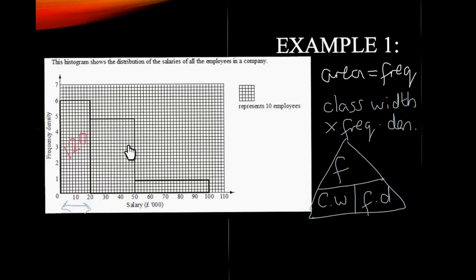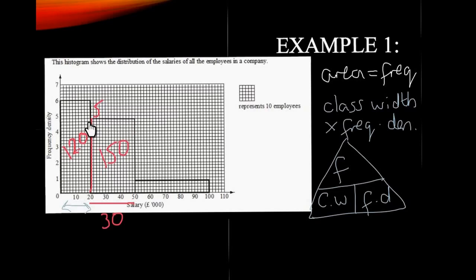Now that we've got this triangle, let's work out the rest of the information. In the next bar, the class width goes from 20 all the way up to 50 — so it's got a class width of 30. Its height goes up to 5. So this rectangle is 5 high and 30 wide, and this represents 150 people. Interestingly, this bar is not as tall as the first one, yet it represents more. This is where histograms can be a little bit confusing, because it's the area of this rectangle that is bigger.